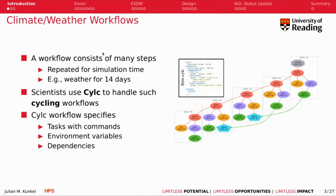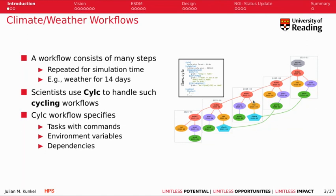Climate and weather workflows can be considered as a directed acyclic graph. Inside this graph, there are certain stages that are repeated several times — for example, for every month you run a similar computation and generate a similar output at the end. So you repeat this stage maybe hundreds of times.